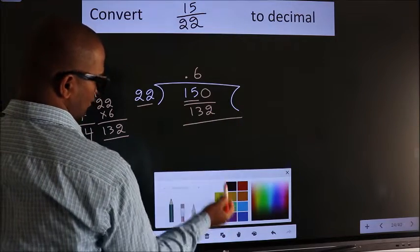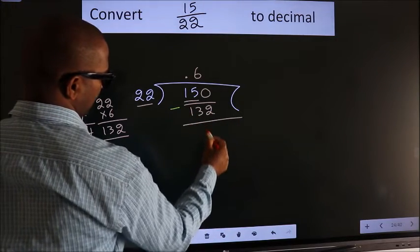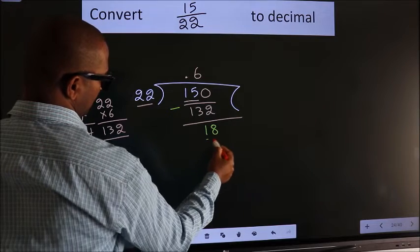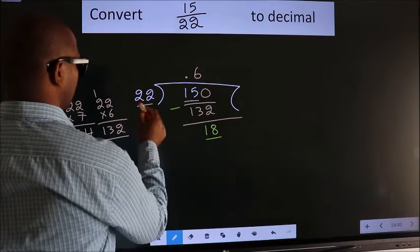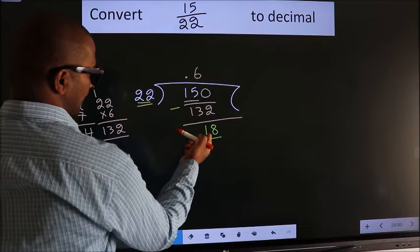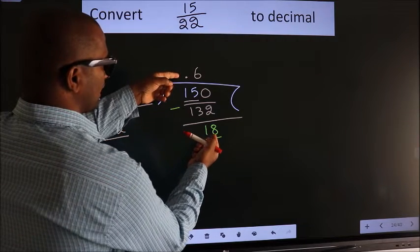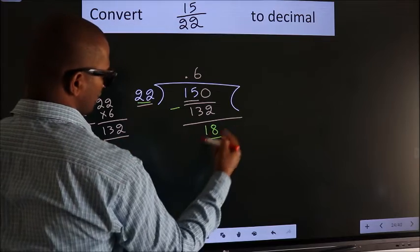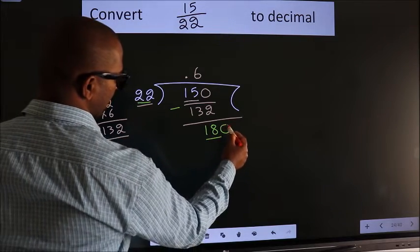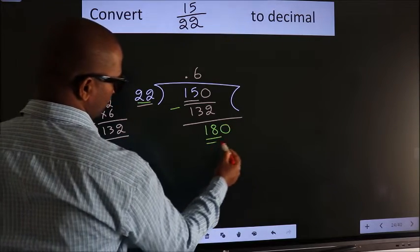Now, we should subtract. We get 18. Here we have 18, here 22. 18 is still smaller than 22. We already have the decimal, so this time we can directly take 0. So, 180.